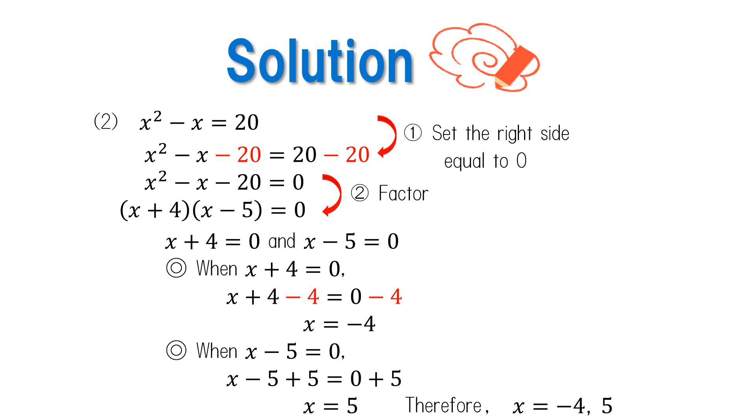For this problem, we need to set the right-hand side to 0, so we first reorganize the equation. After that, we factor and get x minus 5 equals 0 and x plus 4 equals 0, giving us the solutions x equals negative 4 and x equals 5.